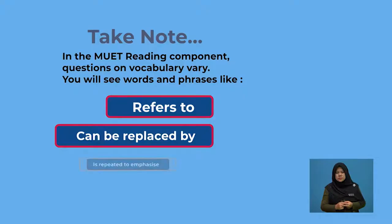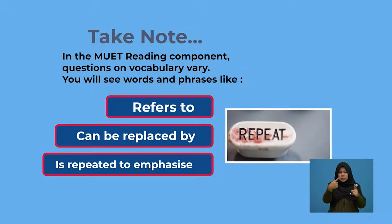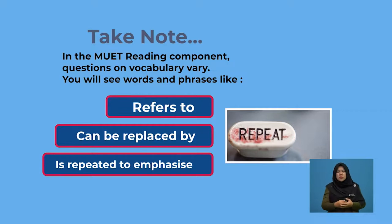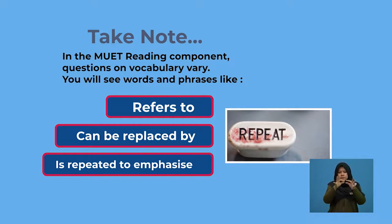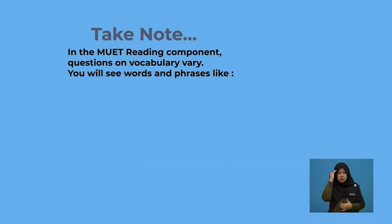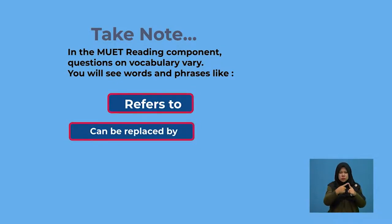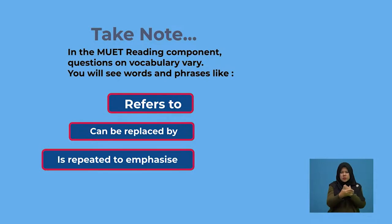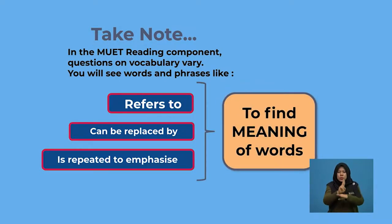Besides that, there is another phrase used to elicit your vocabulary: 'is repeated to emphasise.' This phrase is used when a word is repeated a few times. There could be many reasons why a word is repeated in a paragraph, so you must first read the sentence to get a clearer picture. Now you know that these phrases — 'refers to,' 'can be replaced by,' and 'is repeated to emphasise' — are used to find the meaning of words.